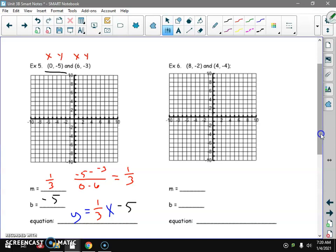0, negative 5 is the first point. Don't go over, just go down. Over 6 down 3. This is that line right there. That slope is up 1 over 3, and the Y intercept is negative 5. That's perfect.